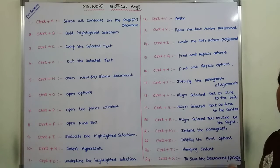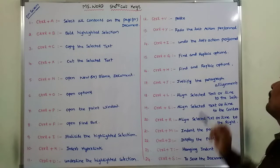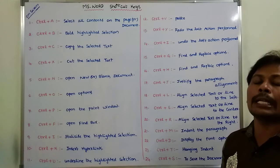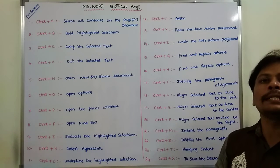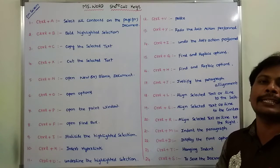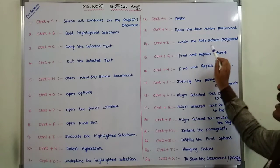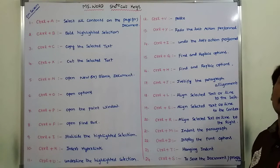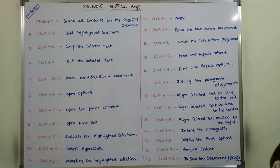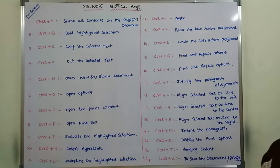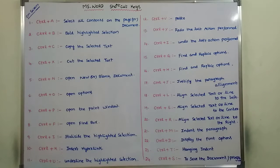Next is Ctrl plus G. This command or key is used for find and replace options. Suppose you want to find a particular name or word in a page or document — use find; to replace selected text — use replace. For find and replace, use Ctrl plus G. Ctrl plus H is also the same — find and replace options. You can use either Ctrl plus G or Ctrl plus H.